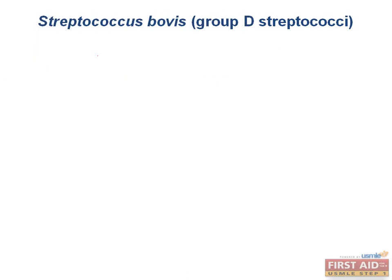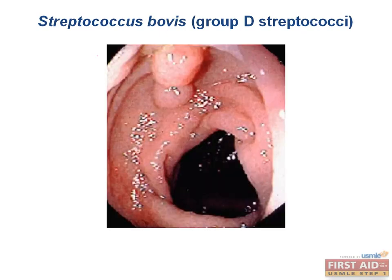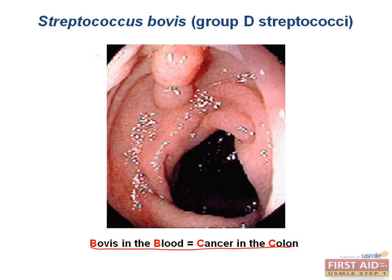Strep bovis infections are uncommon, but for unknown reasons are associated with cancers of the GI tract. If a patient presents with blood cultures positive for strep bovis, you should suspect a GI malignancy and order a colonoscopy. Use the mnemonic: bovis in the blood, cancer in the colon.